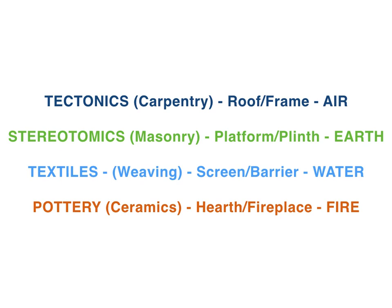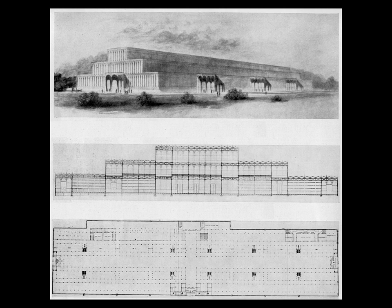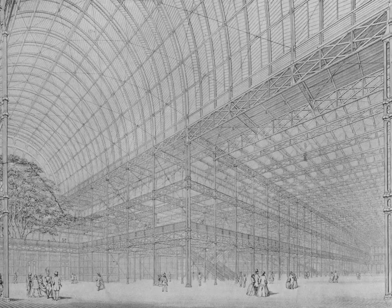I want to turn to a very important event that took place at the time Semper was in London. Today it's hard to imagine the excitement of the first International Exhibition for Industry and Art, which opened in Hyde Park on the first of May 1851. The exhibition was housed in a new kind of building made from metal and glass called the Crystal Palace.